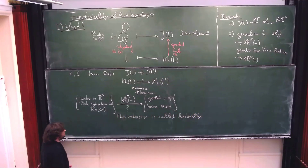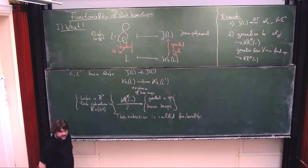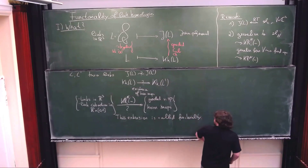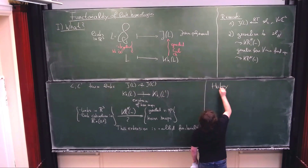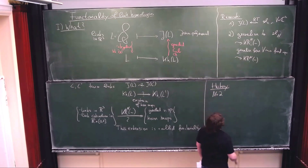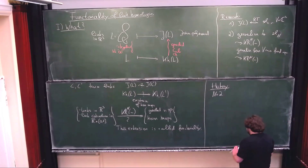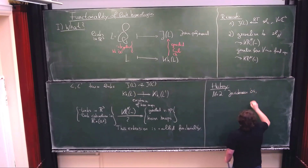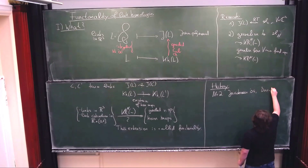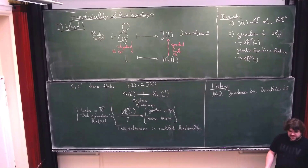The question of functoriality is whether we can extend the construction of these link homologies to an honest functor from this cobordism category to graded vector spaces. Let's go through a brief history. It began roughly in 2000 with the original Khovanov question. The first results showed this is not possible in a naive way: Jacobsson in 2004 and Khovanov in 2005 showed it nearly works with the original construction up to a sign.